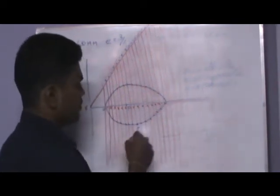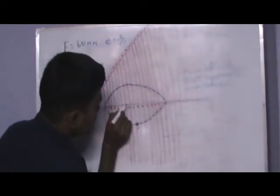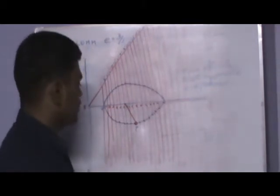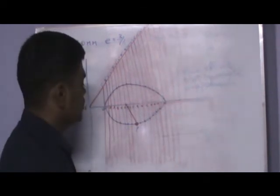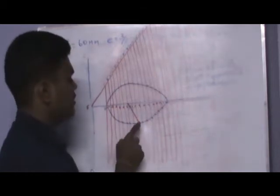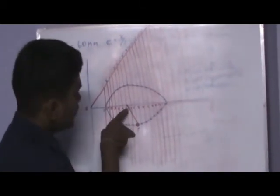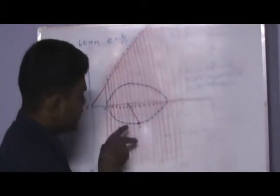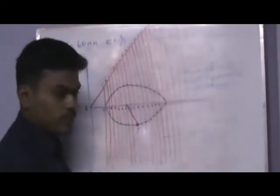Take any point on the ellipse, I have taken here. Join the point and the focus with a straight line. I repeat, to draw a tangent and normal to the ellipse, take any point on the ellipse wherever you want. I have taken here and given the name as P. Join the point and the focus with a straight line, and with PF as base.